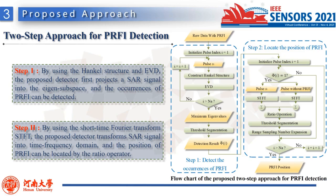In the past few decades, numerous PRFI detection methods have been proposed. However, most of them can only detect the occurrence of PRFI and cannot obtain the position information of PRFI. For some PRFI mitigation measures, they need to obtain position information of PRFI accurately. Otherwise, the performance of mitigation will be severely limited. In our paper, aiming at the detection and location of PRFI, a novel detector based on a two-step process is proposed.